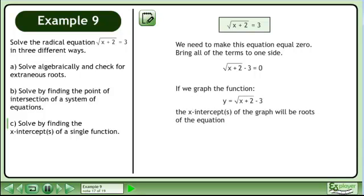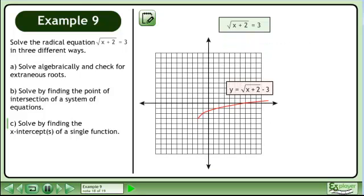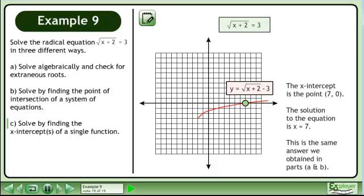If we graph the function y equals the square root of x plus 2 minus 3, the x-intercept is the point of intersection of x equals 0. Draw the graph of y equals the square root of x plus 2 minus 3. The x-intercept is the point 7,0. The solution to the equation is x equals 7. This is the same answer we obtained in parts A and B.